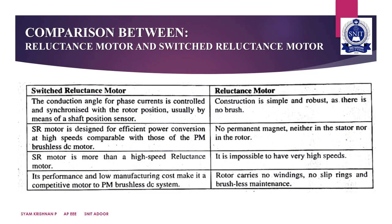For the switched reluctance motor, a shaft position sensor is used. The phase currents are controlled by the conduction angle, and the rotor position data is controlled using a shaft position sensor.